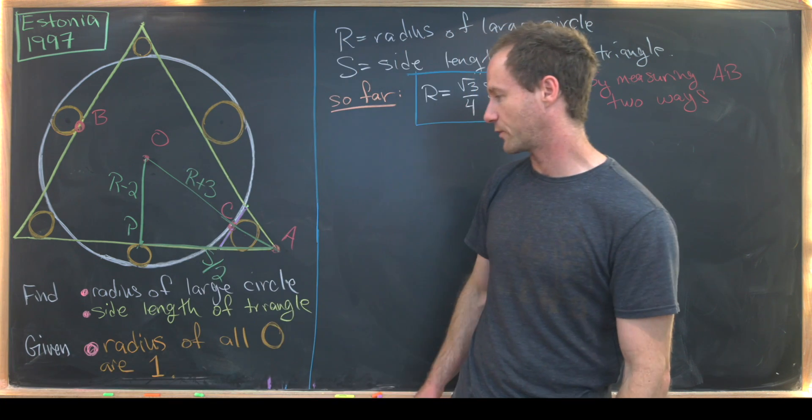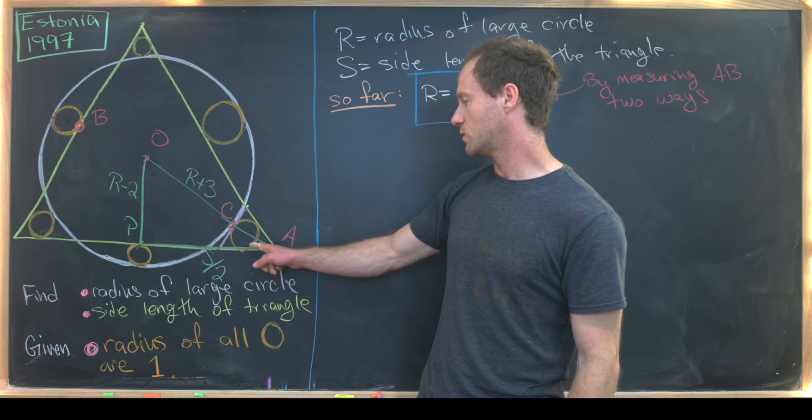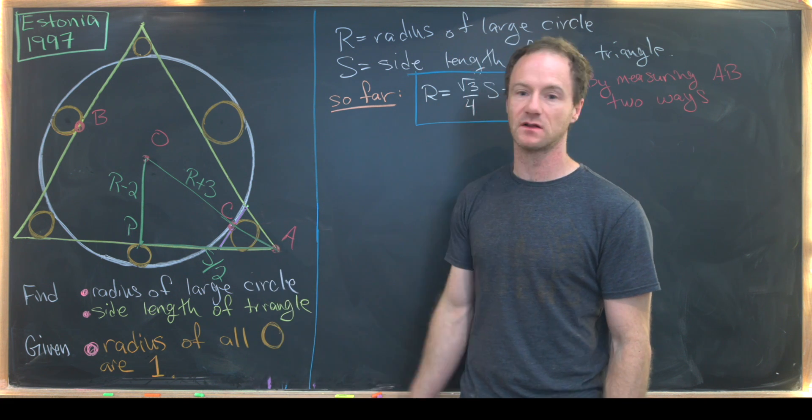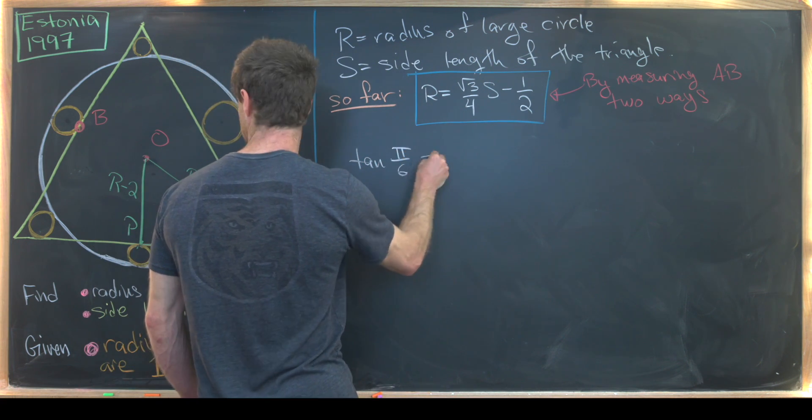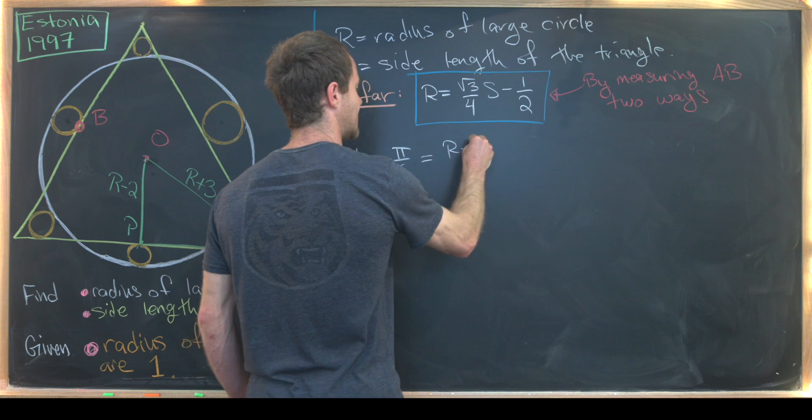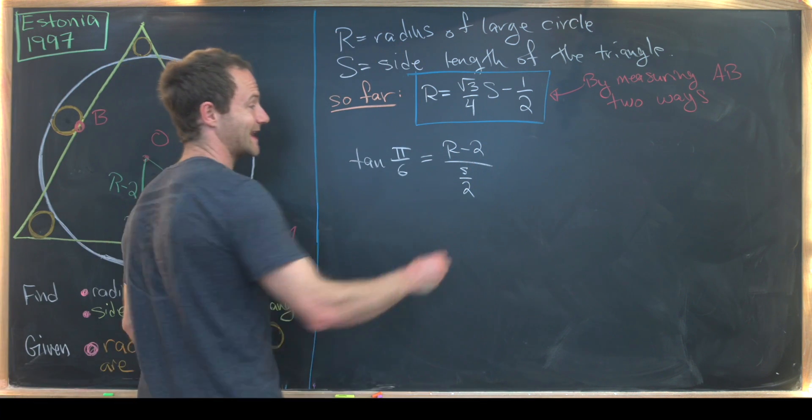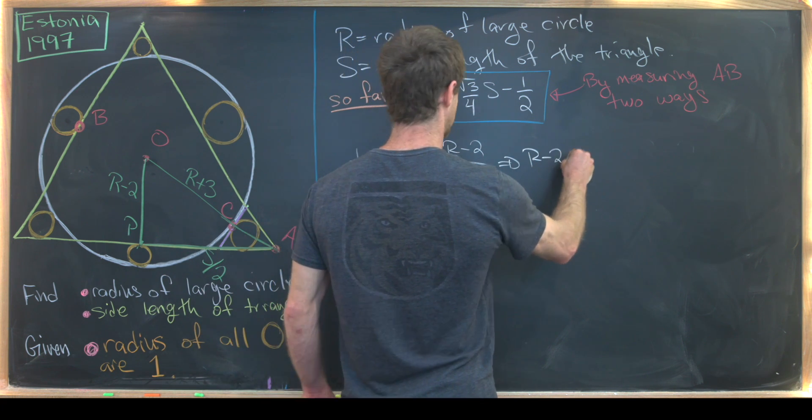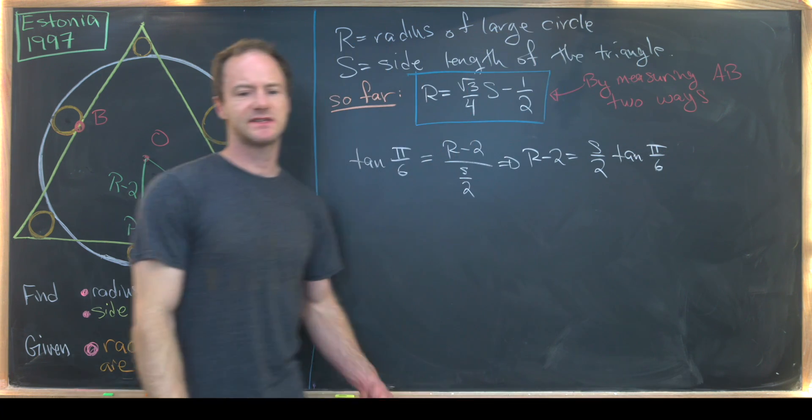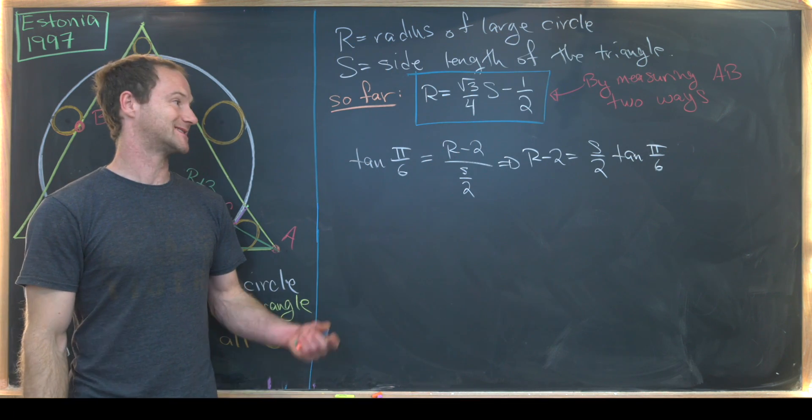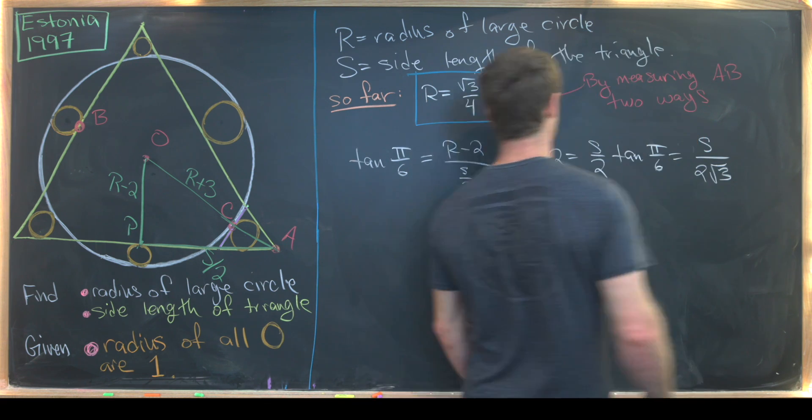But now there are a couple of paths that we can take. We can apply the Pythagorean theorem, but I think it's easier to use trigonometry again. Here we'll use the tangent of this angle. This angle is again π over six. So we get tangent of π over six is equal to R minus two over S over two, like that. But that tells us that R minus two equals S over two times tan π over six. But tangent π over six is a fairly standard angle. And here we'll get that this is equal to S over two root three.